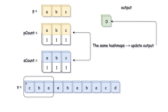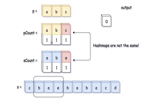In the first window we have a=1, b=1, c=1, which is an exact match with p_count, so we pick the starting index zero as one of the indices where we have a match. When we move the sliding window to the right, we remove c and add e. Moving one more time to the right, we remove b and add b, and here there is no match because c does not equal e.